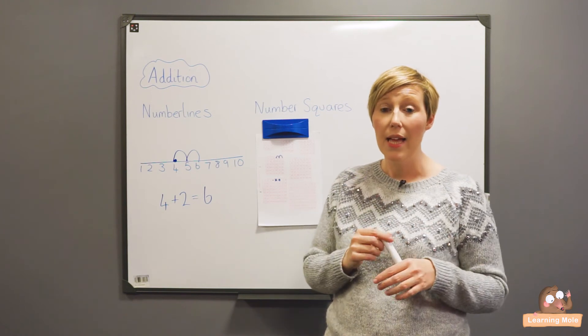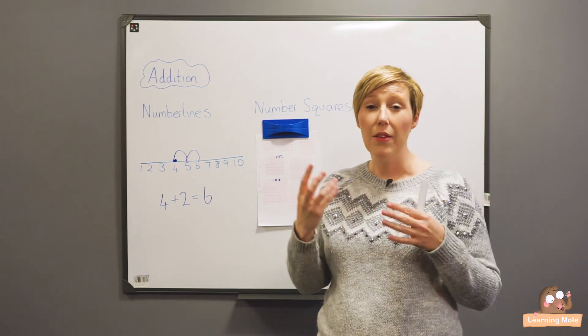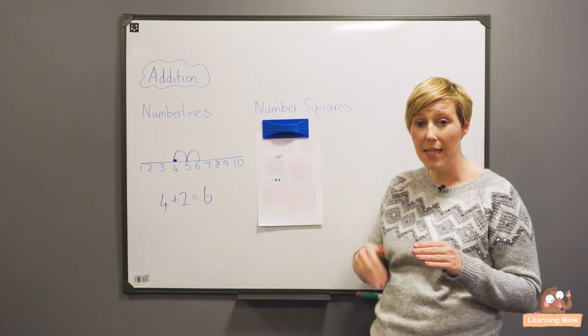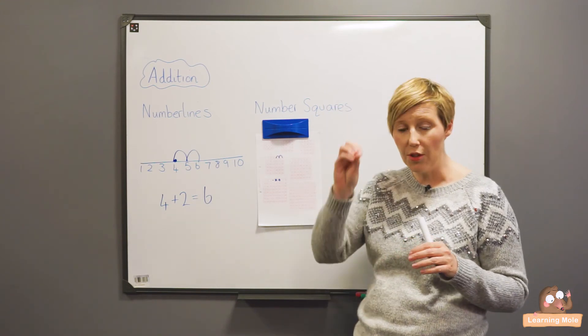...you're adding 10 every time, the number will be below, below, below because it'll be 10, 20, 30, 40, 50, 60. They'll also see the idea of place value because each time the tens number is changing but the units stay the same.